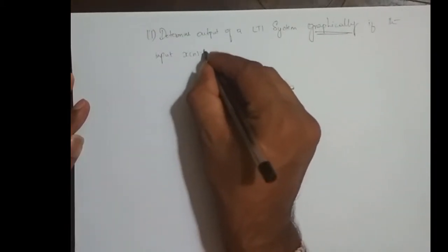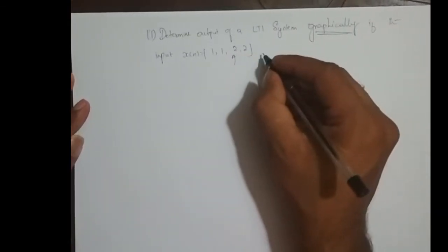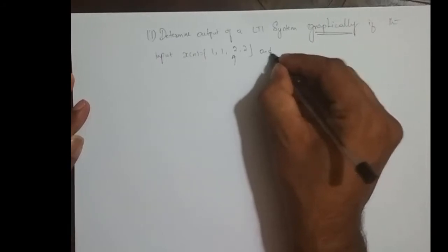x of n is equal to 1, 1, 2, 2, sample at n equal to 0 is 2, and impulse response